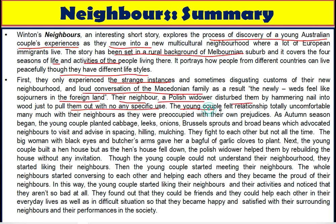They were preoccupied with their own prejudices — predetermined concepts. As the autumn season began, the young couple planted cabbage, leeks, onions, Brussels sprouts, and broad beans, which encouraged neighbours to visit and advise them in spacing, weeding, and mulching. As the neighbours knew about the planting, they visited and helped the young couple in several ways. They would fight with each other, but not all the time. Even a big woman with black eyes and butcher's arms gave her a bag full of garlic cloves to plant.